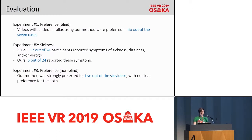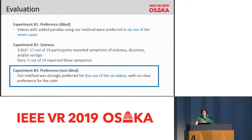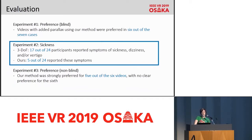To validate if the results achieved with our method also provide advantages over conventional VR video viewing, we performed three different user studies using 360 videos with and without added motion parallax. We designed two experiments for assessing preference and one for assessing sickness. For the first preference experiment, users did not know the purpose of the test and were asked to freely watch the videos without further instructions and tell us about their preferences — our videos with added parallax were preferred in six out of seven cases. For the second preference experiment, testing whether motion parallax is appealing once explicitly known, our method was strongly preferred for five out of six videos. For the sickness experiment, 17 out of 24 participants reported symptoms of sickness while watching the videos without motion parallax, and only five experienced these symptoms with our method.